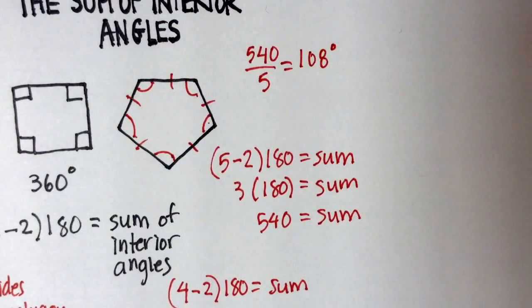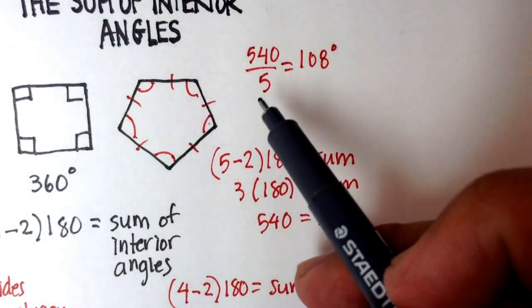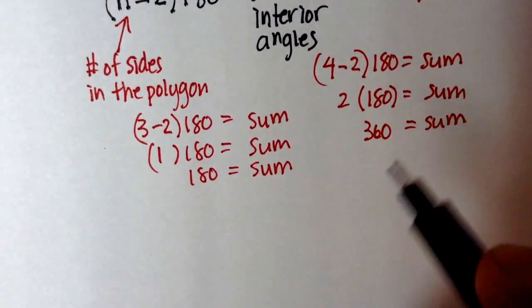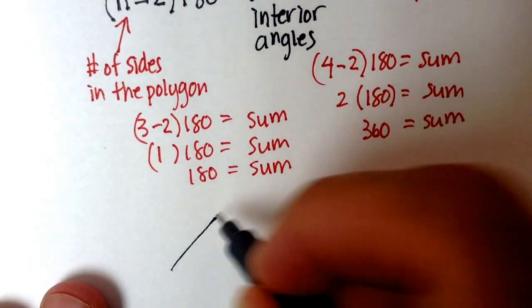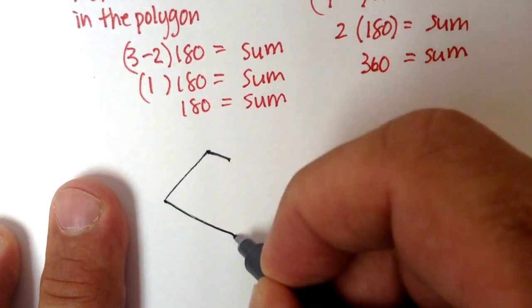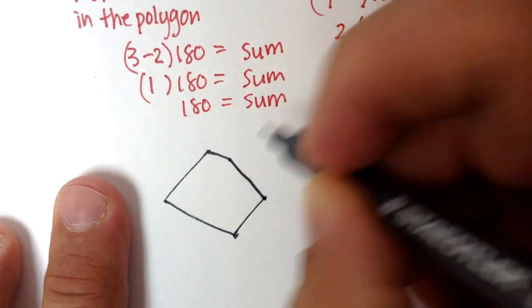Now, what if your polygon is not a regular polygon? Then this wouldn't work. What would be an example of that? Well, let me show you. So a pentagon with five sides, 1, 2, 3, 4, 5.